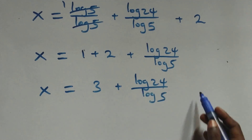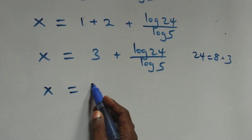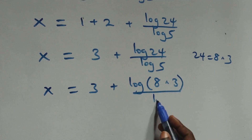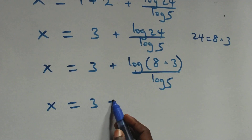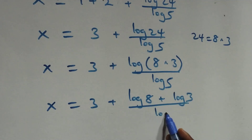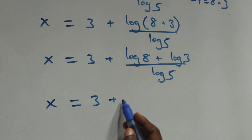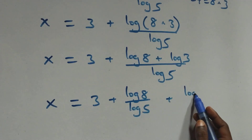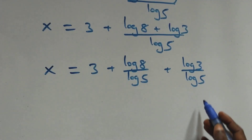Then from here we can write 24 as 8 times 3, which implies this becomes x equals to 3 plus log of 8 times 3 over log 5. This also follows the law of logarithm and we can write this as x equals to 3 plus log 8 plus log 3 over log 5. Then here we separate this into two fractions: x equals to 3 plus log 8 over log 5 plus log 3 over log 5.